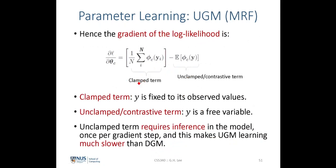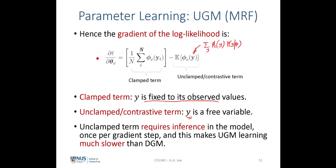The clamped term has Y fixed to its observed values — this is a summation over i or over Yi, meaning we have n observations for the set of random variables in our clique potential. The unclamped or contrastive term means Y is a free random variable that we are not observing, so we must marginalize over all possible values of Y. This is what we have seen in the previous slide. The difficult part is that the unclamped term involves marginalization over Y and can no longer be computed in closed form, unlike in the directed graphical model.